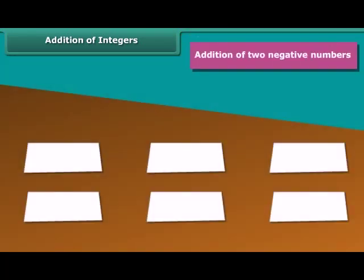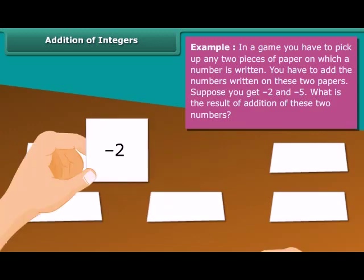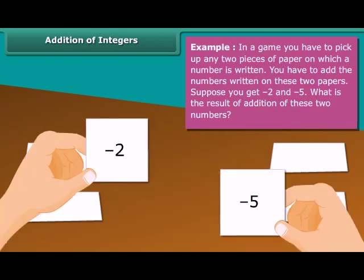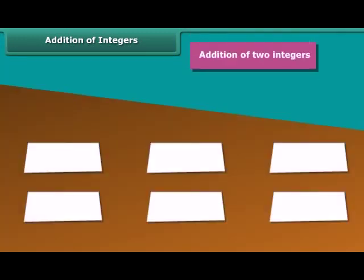Addition of two negative numbers. Example: In a game, you have to pick up any two pieces of paper on which a number is written. You have to add the numbers written on these two papers. Suppose you get minus 2 and minus 5. What is the result of addition of these two numbers? Minus 2 plus minus 5 equals minus 2 plus 5, which equals minus 7. Addition of two integers.